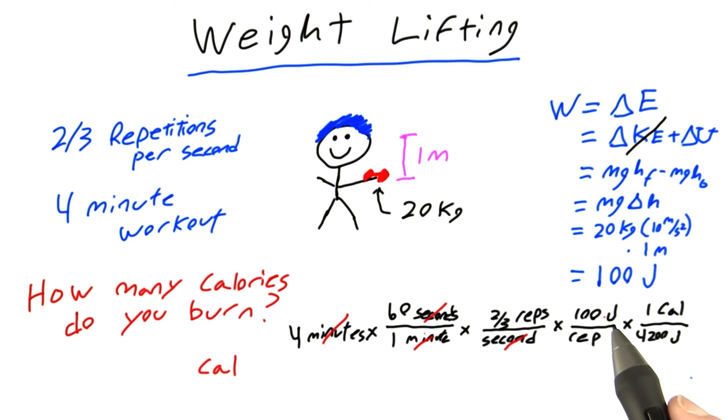We do 100 joules of work per each repetition, so repetitions cancel. And there's 1 calorie per 4200 joules, so joules cancel.